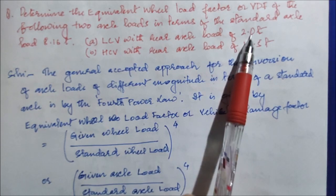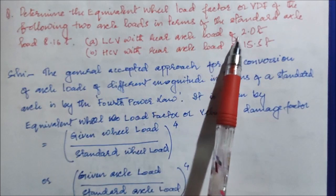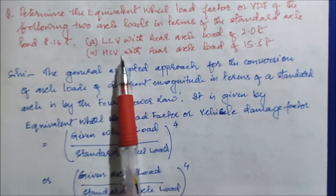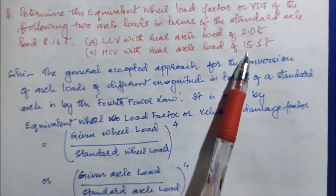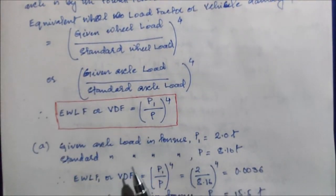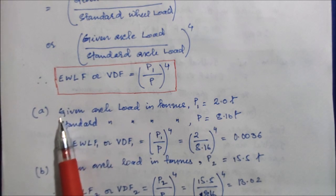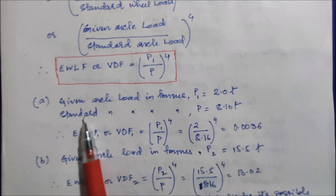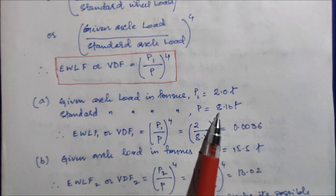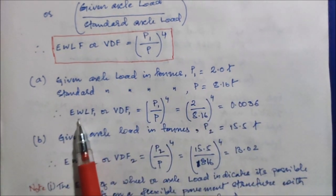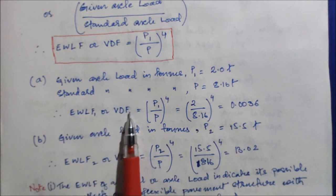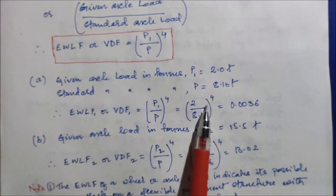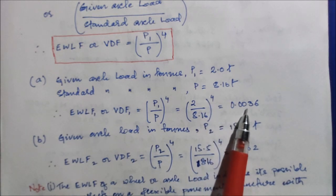For Class A — light commercial vehicles — the given axle load P1 is 2.0 tons and the standard axle load P is 8.16 tons. Therefore, EWLF1 or VDF1 = (P1 / P)^4 = (2 / 8.16)^4, which equals 0.0036.